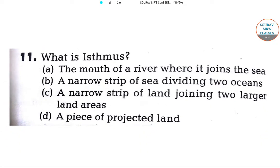So the question is, what is Isthmus? Option A: the mouth of a river where it joins the sea. Option B: a narrow strip of sea dividing two oceans. Option C: a narrow strip of land joining two larger land areas. Option D: a piece of projected land.